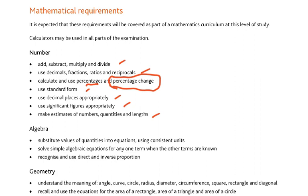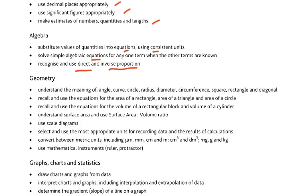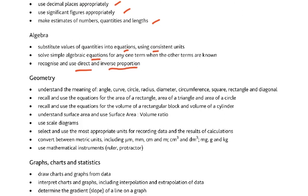Algebra: substitute values of quantities into equations using consistent units, solve simple algebraic equations, recognize and use direct and inverse proportion. Geometry: understand the meaning of angle, curve, circle, radius, diameter, circumference, square, rectangle and diagonal. Recall and use equations for the area of a rectangle, area of a triangle and area of a circle. Recall and use equations for the volume of a rectangular block and volume of a cylinder. Understand surface area and use surface area to volume ratio. Use scale diagrams. Select and use the most appropriate units for recording data and the results of calculations.